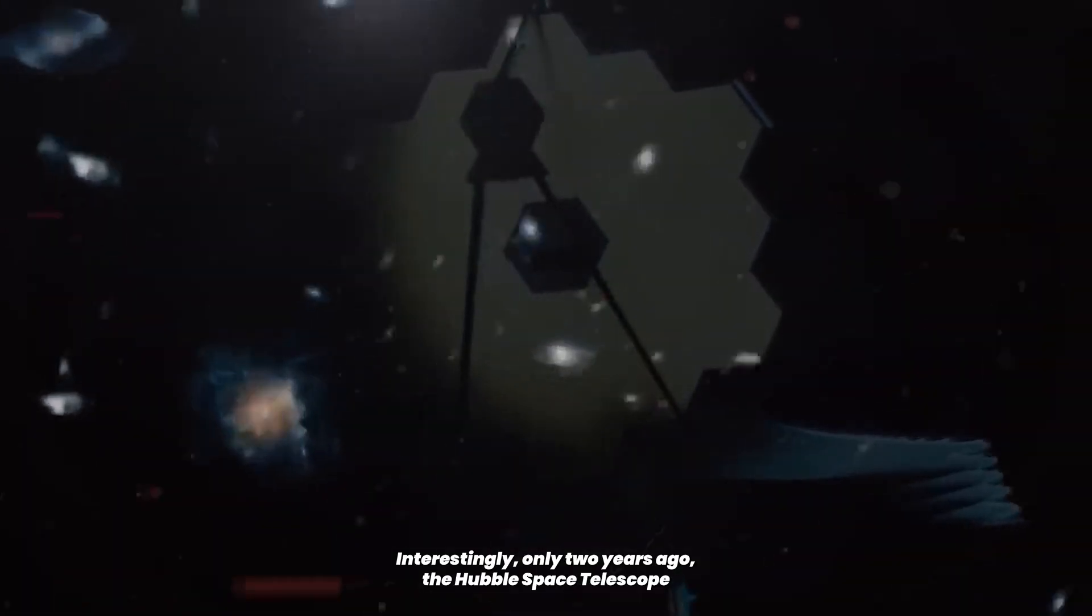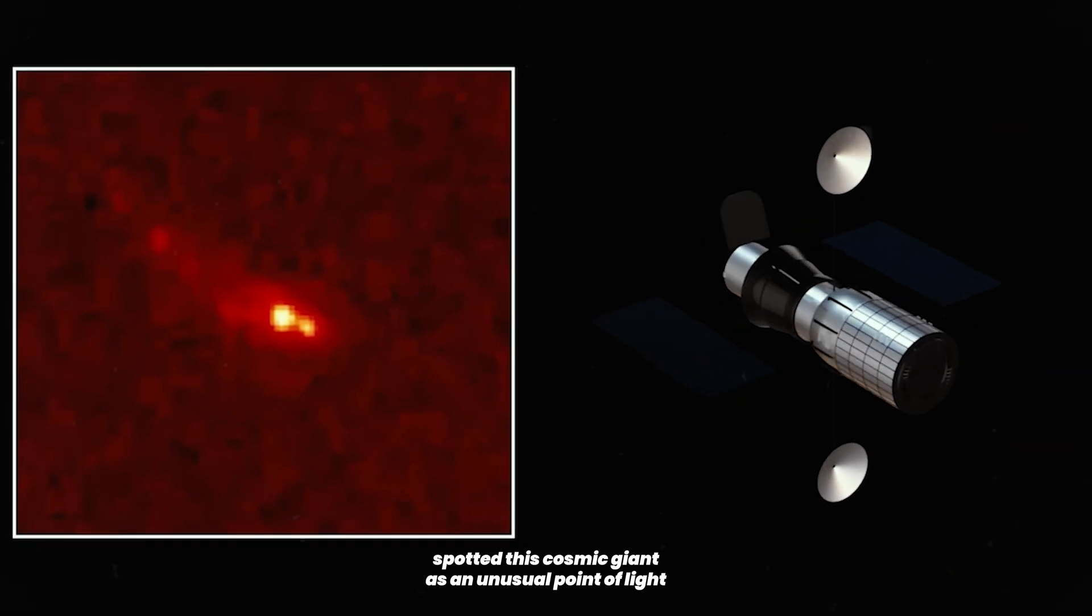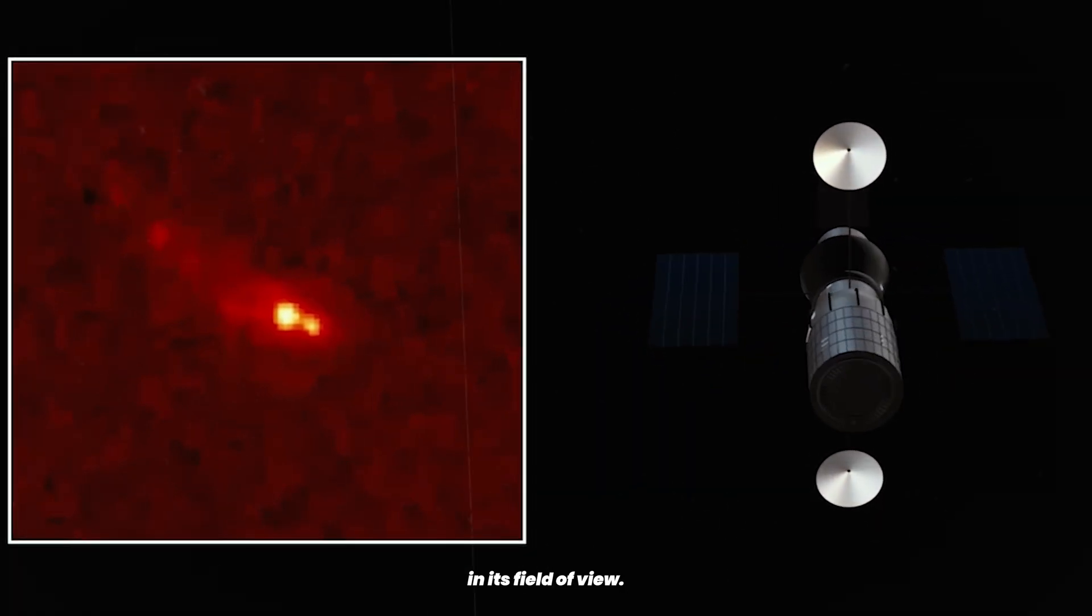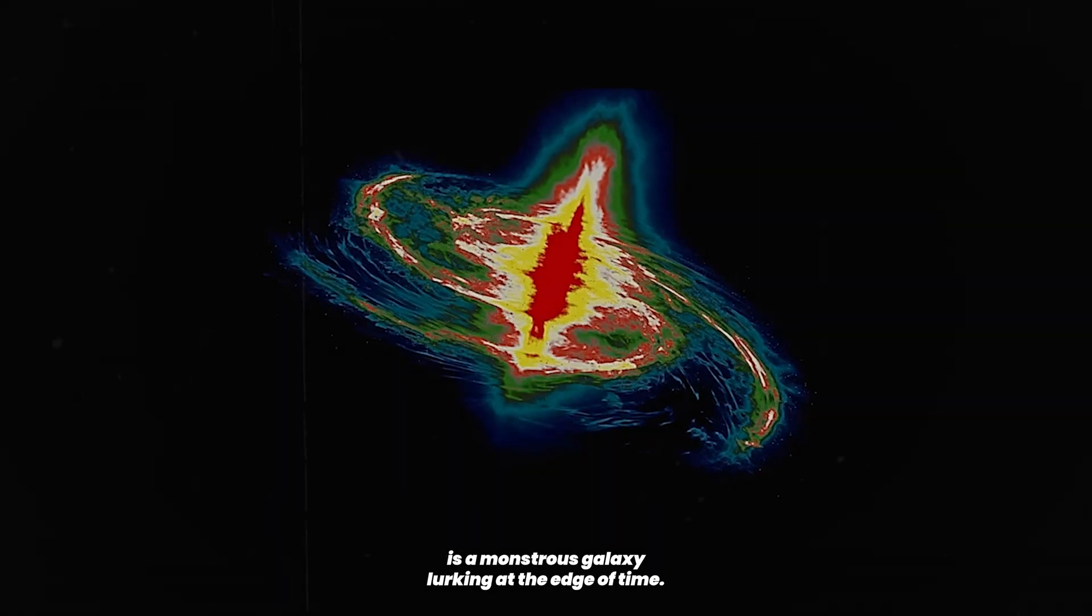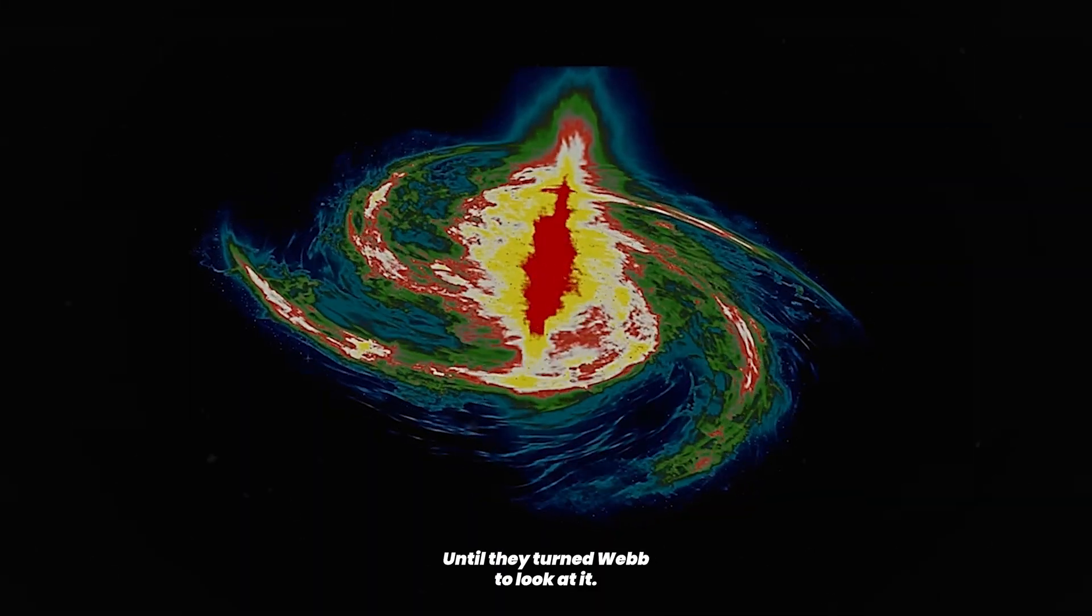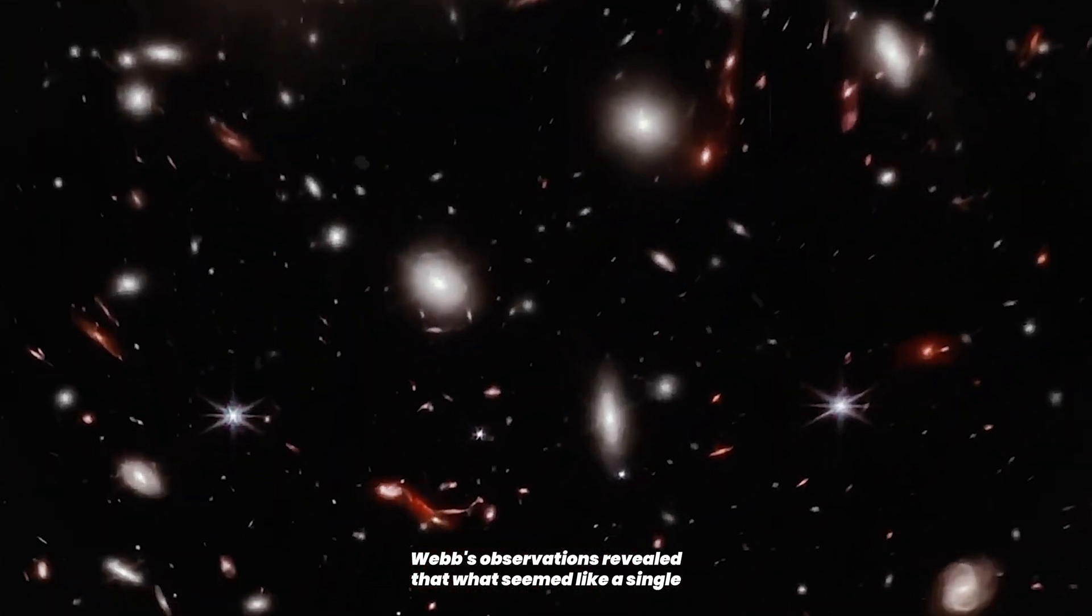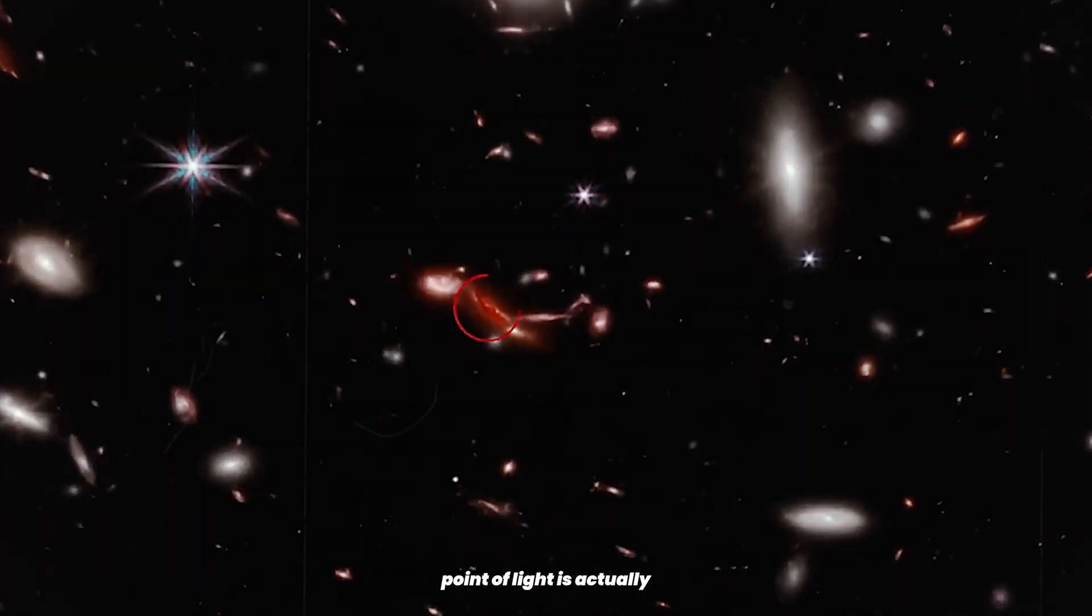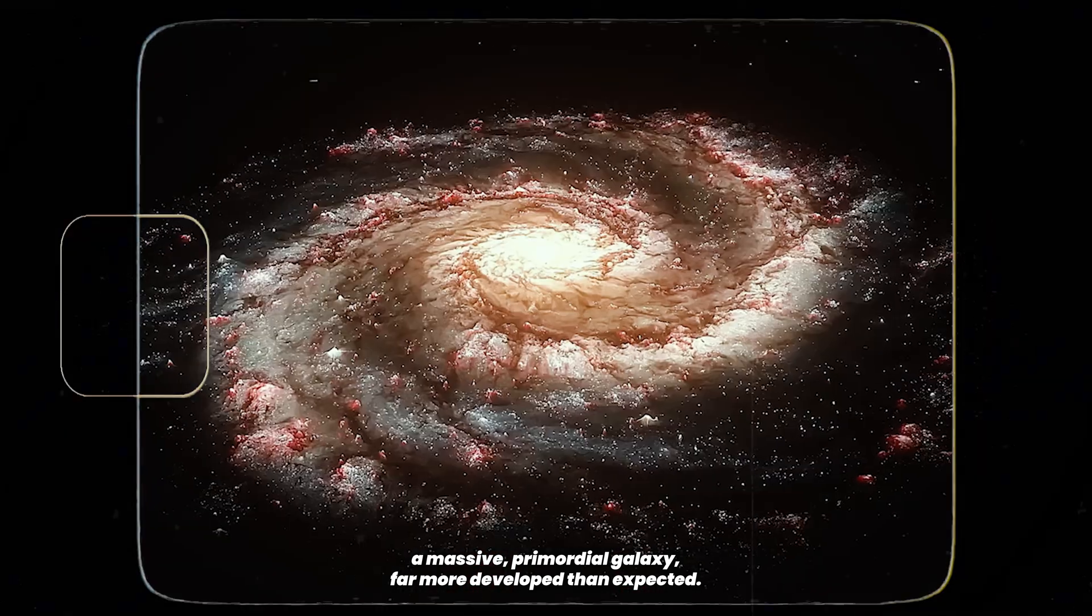Interestingly, only two years ago, the Hubble Space Telescope spotted this cosmic giant as an unusual point of light in its field of view. Scientists couldn't have imagined that this odd speck of light is a monstrous galaxy lurking at the edge of time, until they turned Webb to look at it. Webb's observations revealed that what seemed like a single point of light is actually a massive primordial galaxy, far more developed than expected.